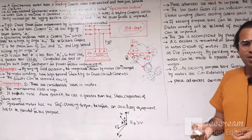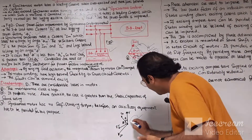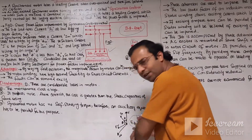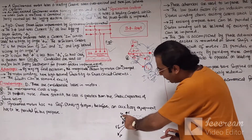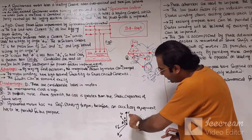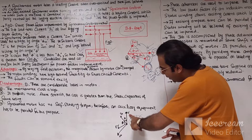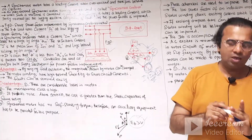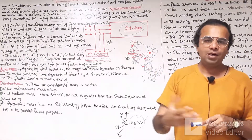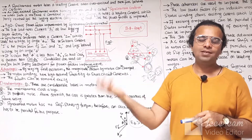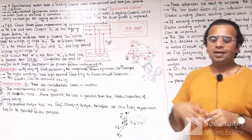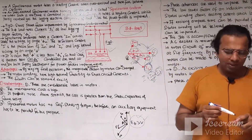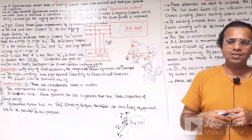Over-excitation of the synchronous motor occurs whenever the back EMF Eb field excitation is greater than the terminal voltage. Due to this effect, the armature current of the stator winding leads the voltage at angle phi. This is the over-excitation condition of the synchronous motor when it is operated at no load — the armature current leads the terminal voltage.